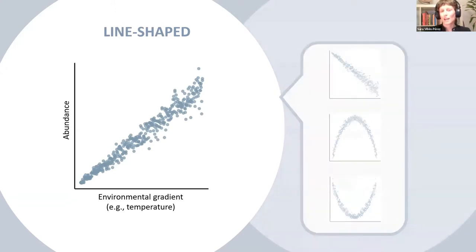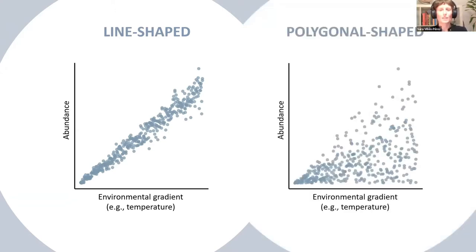But instead of that, you may find a polygonal-shaped pattern where sample units are distributed from zero to an upper limit. You may find this polygonal-shaped pattern not by sampling error, but because ecological theory predicts that.